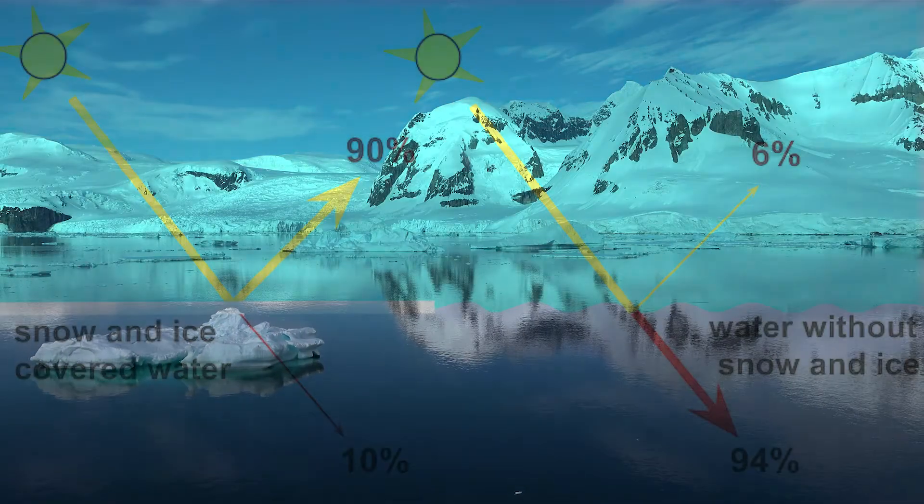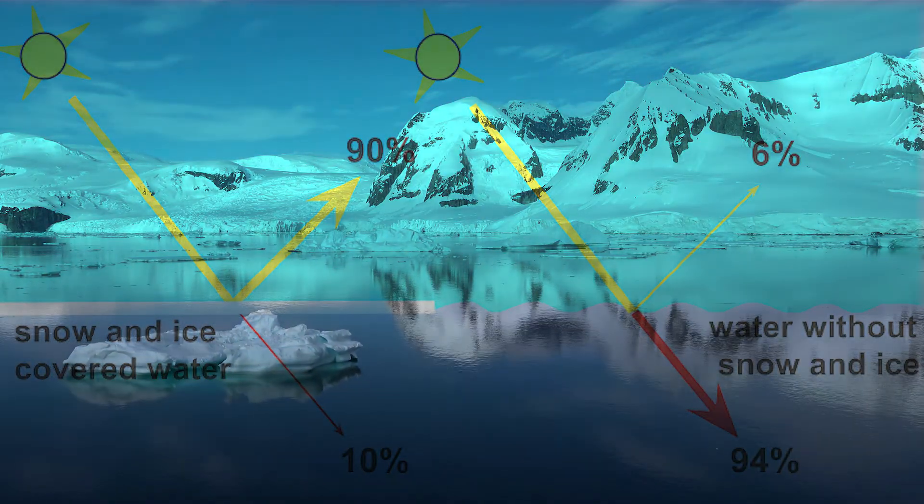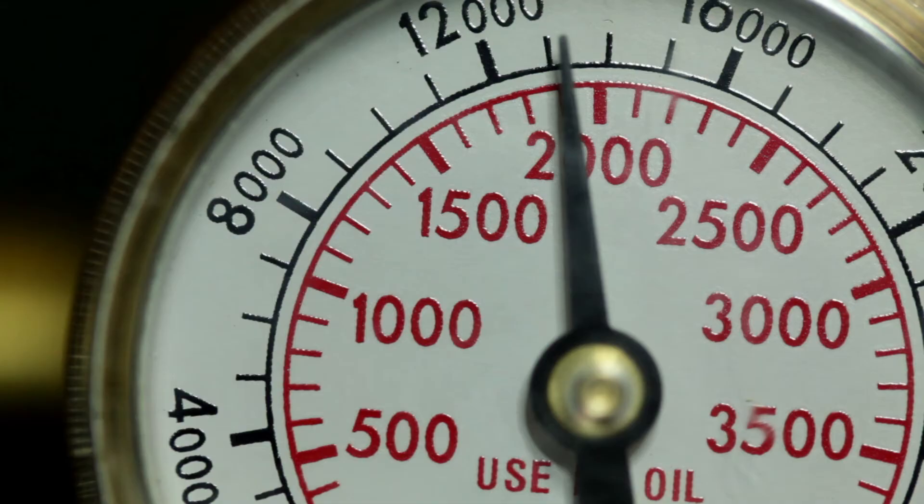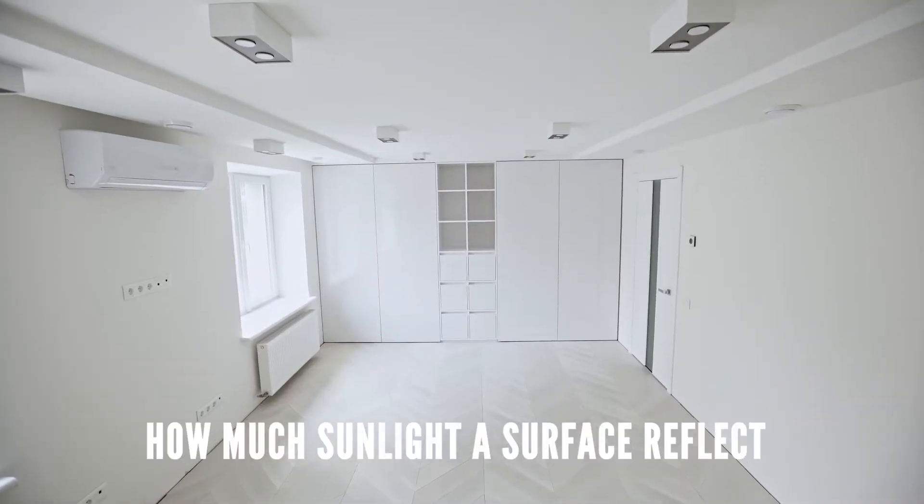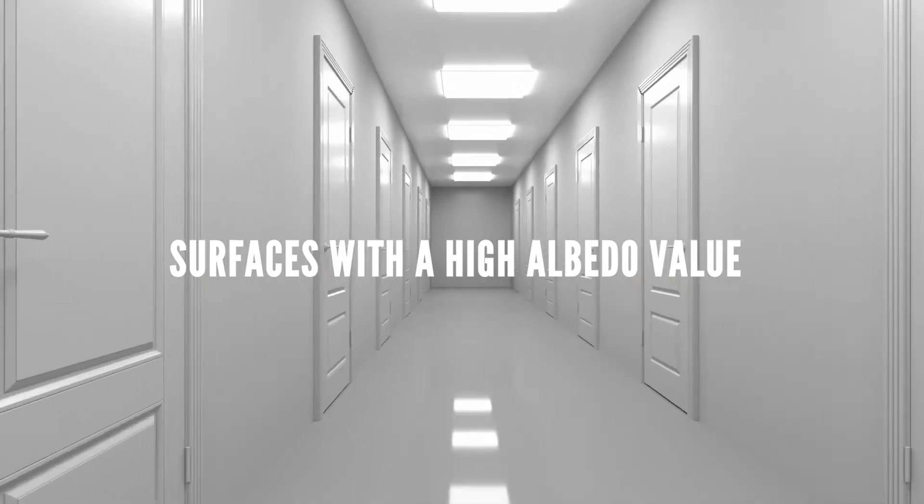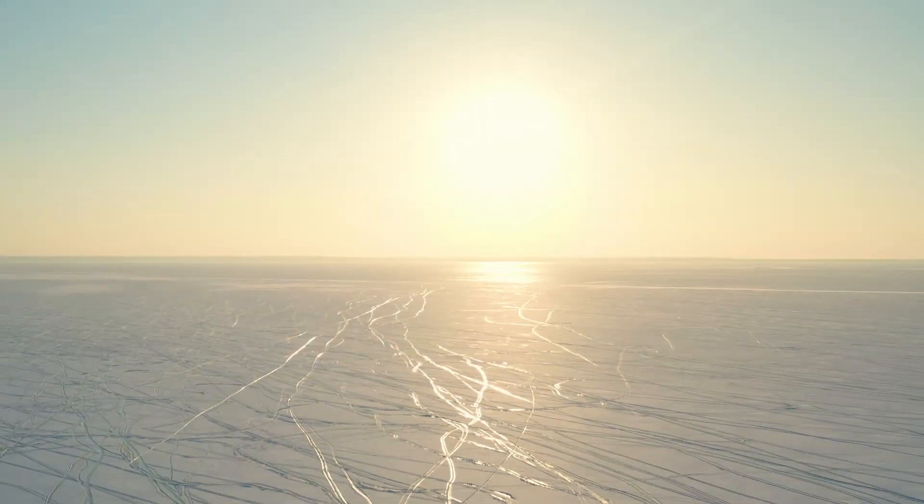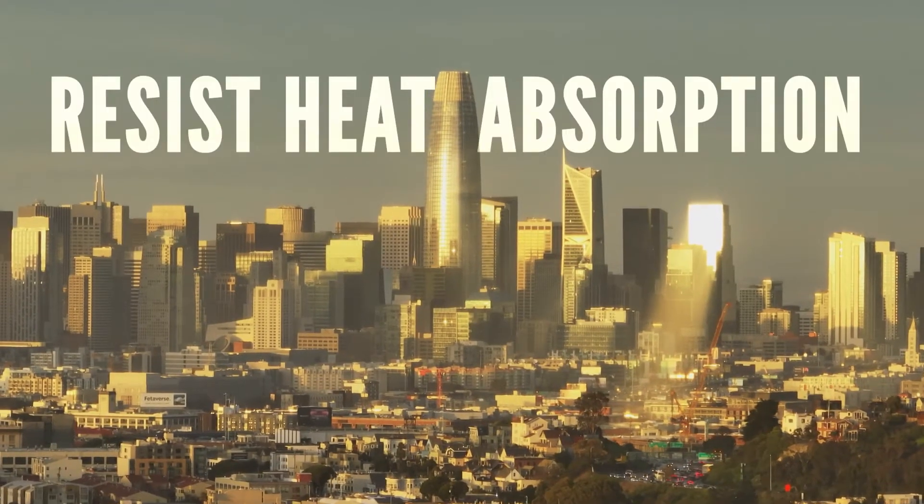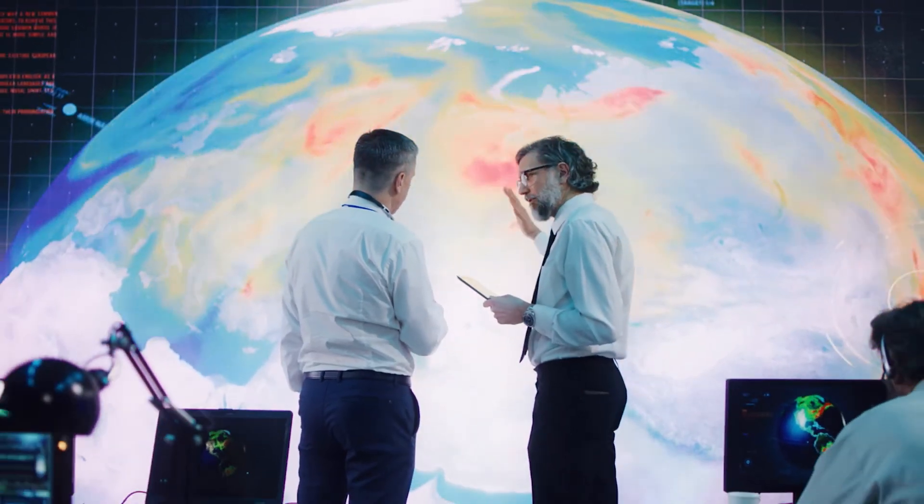Enter the concept of albedo, a term that plays a pivotal role in comprehending why white ceilings are instrumental in cooling indoor spaces. Albedo serves as a gauge for measuring how much sunlight a surface reflects. Surfaces with a high albedo value shine brightly in their ability to reflect sunlight and, importantly, resist heat absorption.